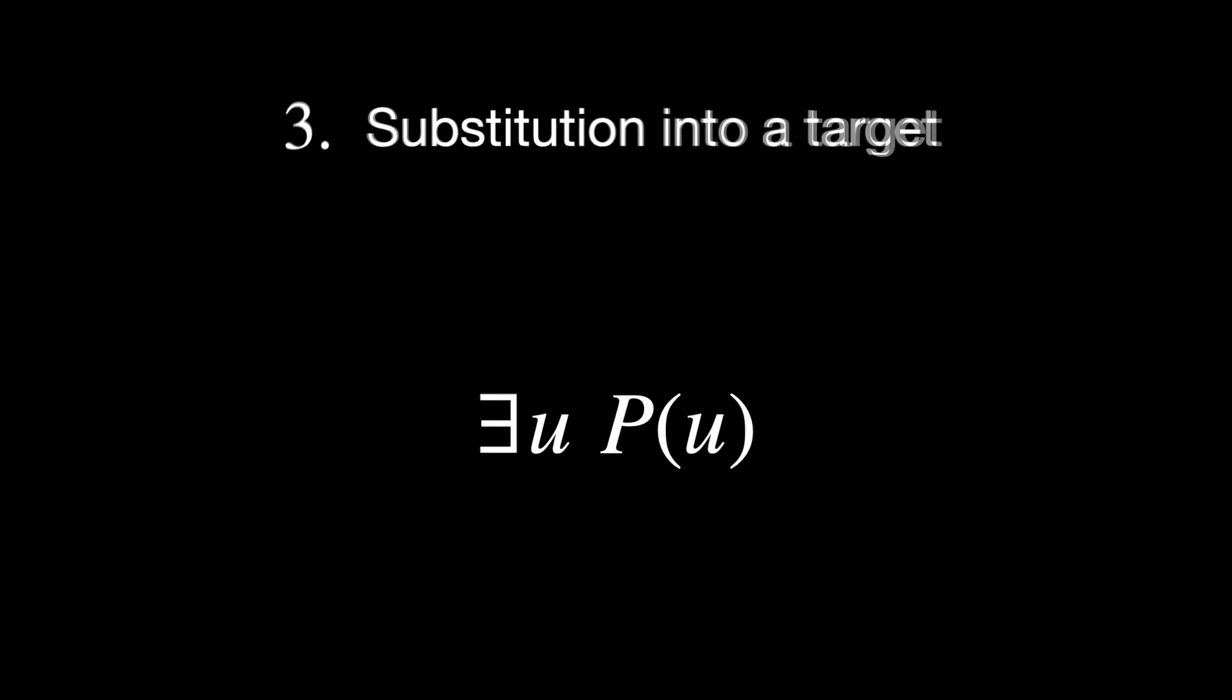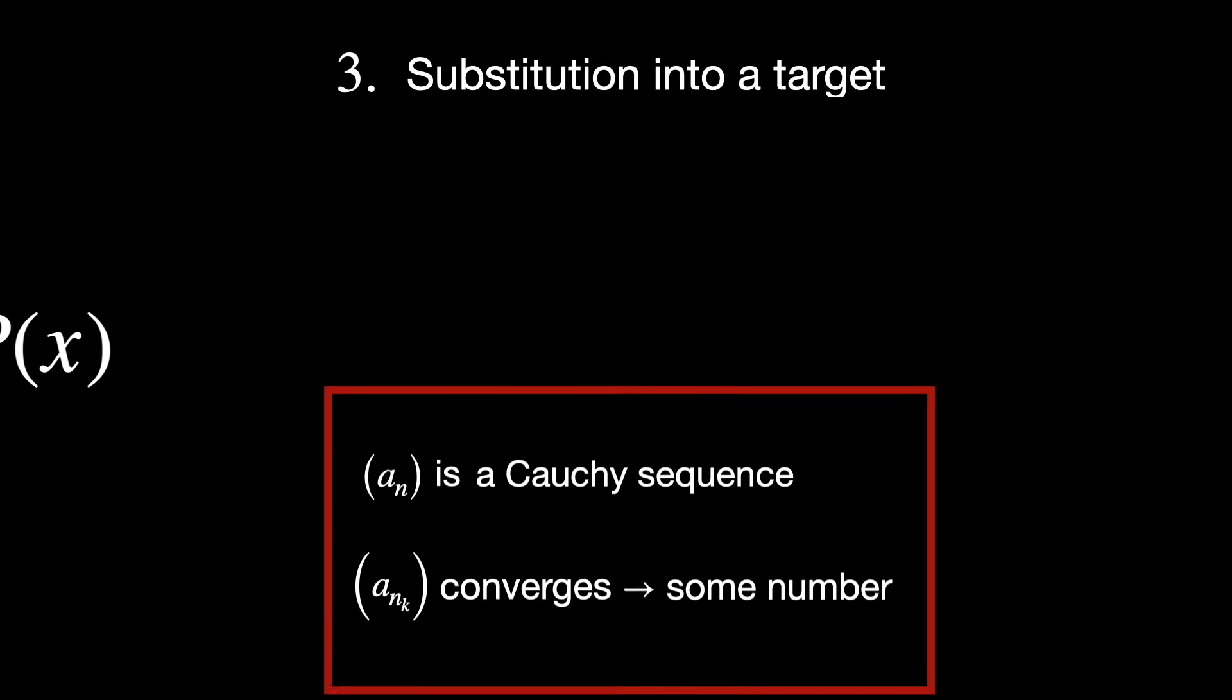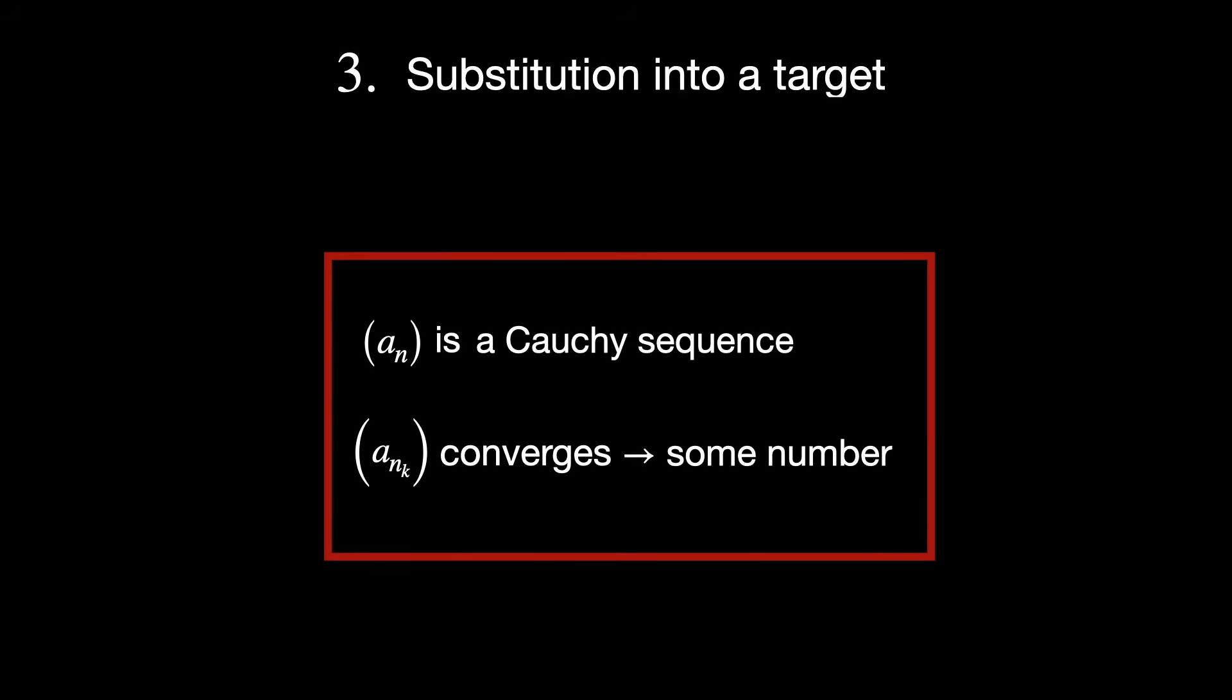Substitution into a target. If your goal is to prove a statement of the form there exists u such that P(u) and you have a candidate x that you think will satisfy P, then you can change your target to that of proving P(x) directly. In the proof, this happened when we moved from proving the sequence converges to something to the sequence converges to a.